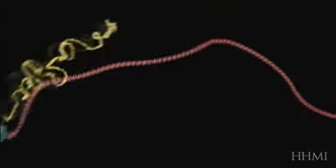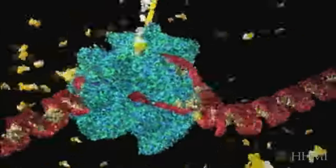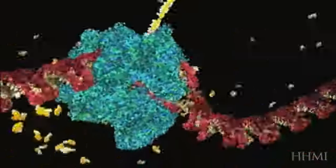The blue molecule racing along the DNA is reading the gene. It's unzipping the double helix and copying one of the two strands.